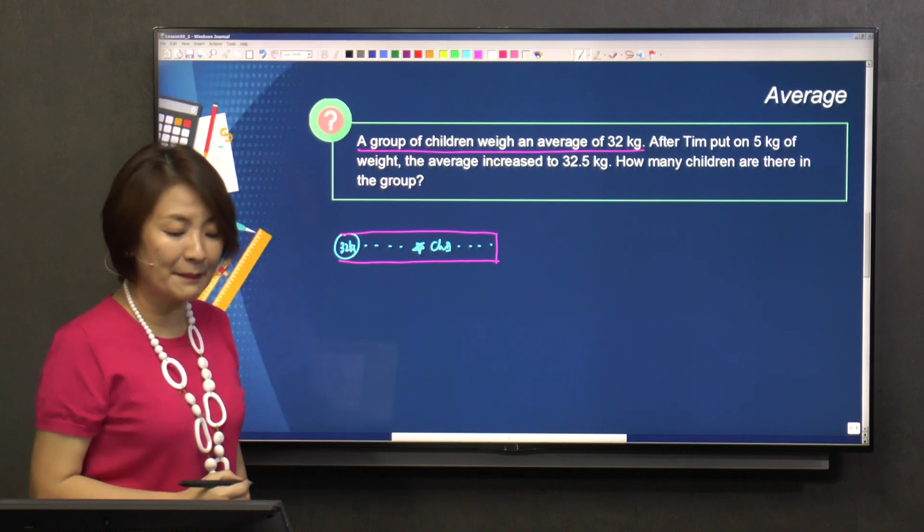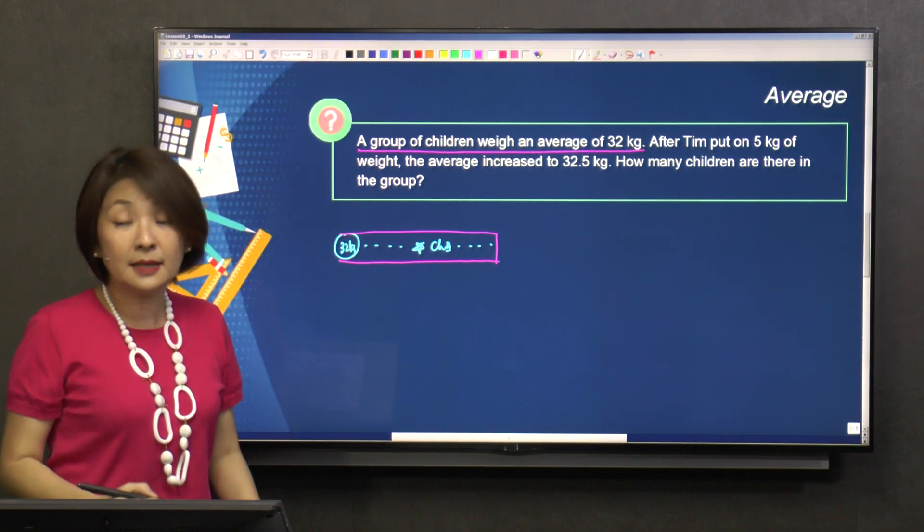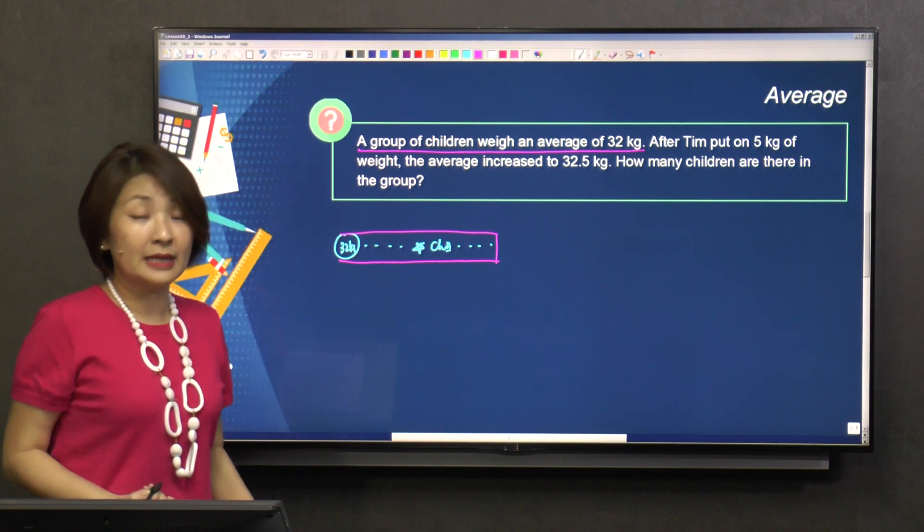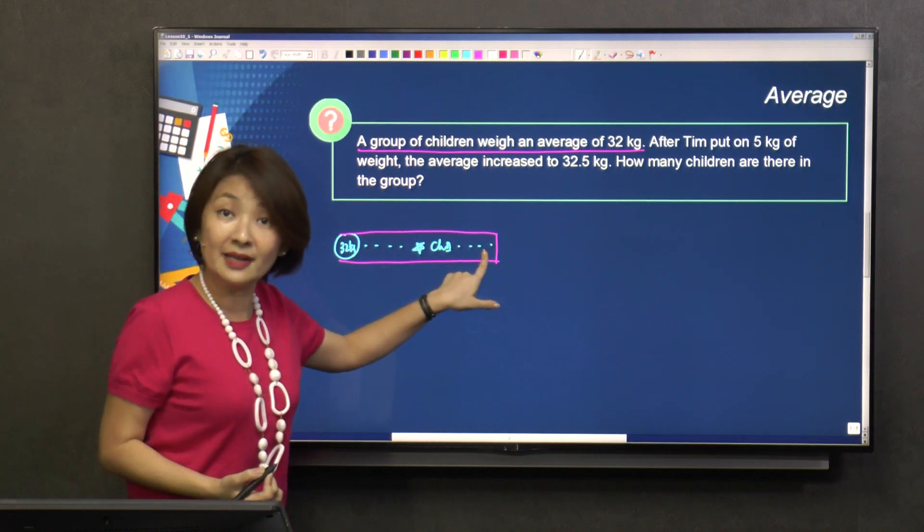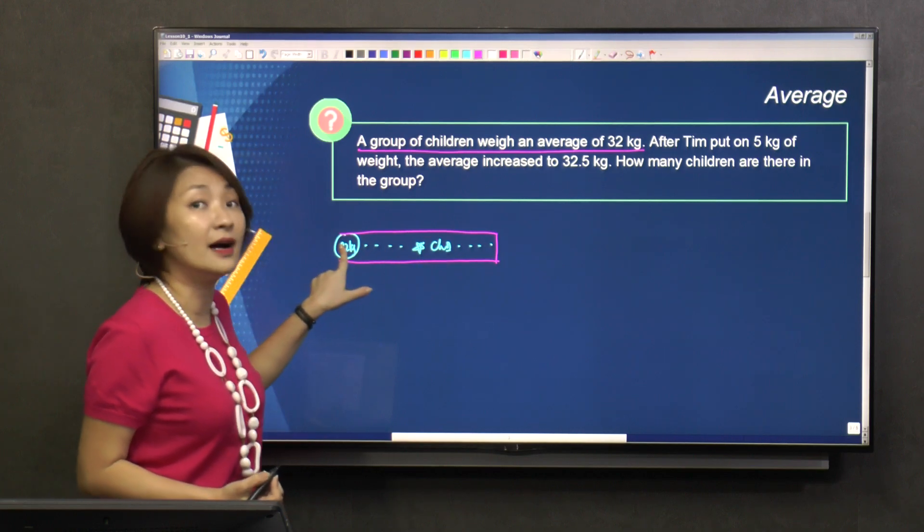Then something happened. What happened? Well, Tim put on 5 kilograms. Now, is Tim one of the children here? He is, right? He is one of the children here.